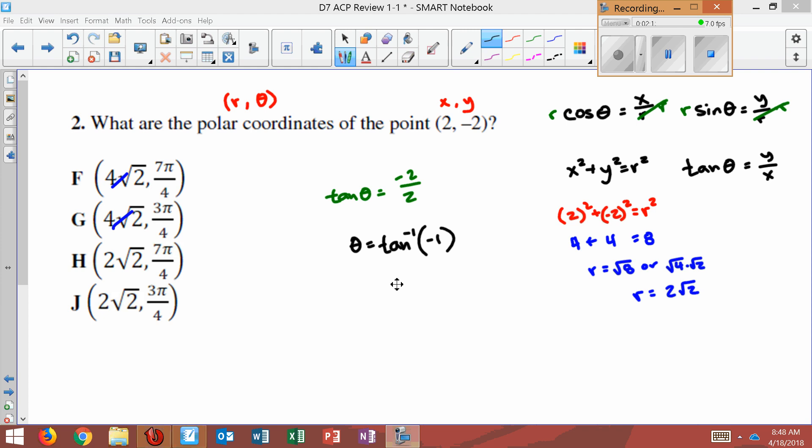Now we could do the hand trick, or you could type it into your calculator. But the only way that tangent's 1 is that you'd have, if you're doing hand trick, the same amount of Y's as X's. So you need the same amount of fingers, which means you're bending your middle finger, which is pi over 4.